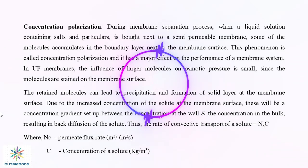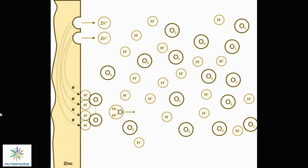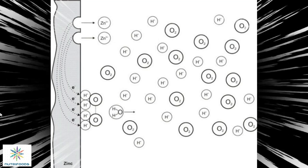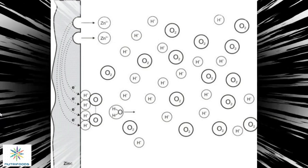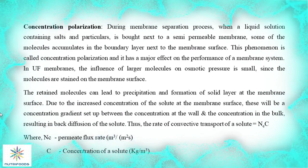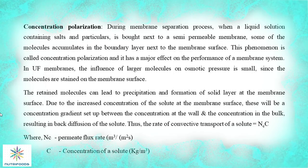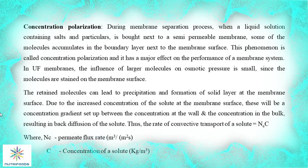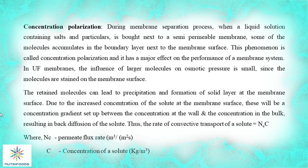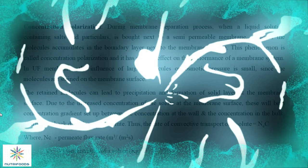In ultrafiltration membranes, the influence of larger molecules on osmotic pressure is small. Since the molecules are retained on the membrane surface, the retained molecules can lead to precipitation and formation of a solid layer at the membrane surface. Due to the increased concentration of solute at the membrane surface, there will be a concentration gradient between the concentration at the wall and the concentration in the bulk, resulting in back diffusion of the solute. Thus, the rate of convective transport of a solute is equal to Nc multiplied by C.